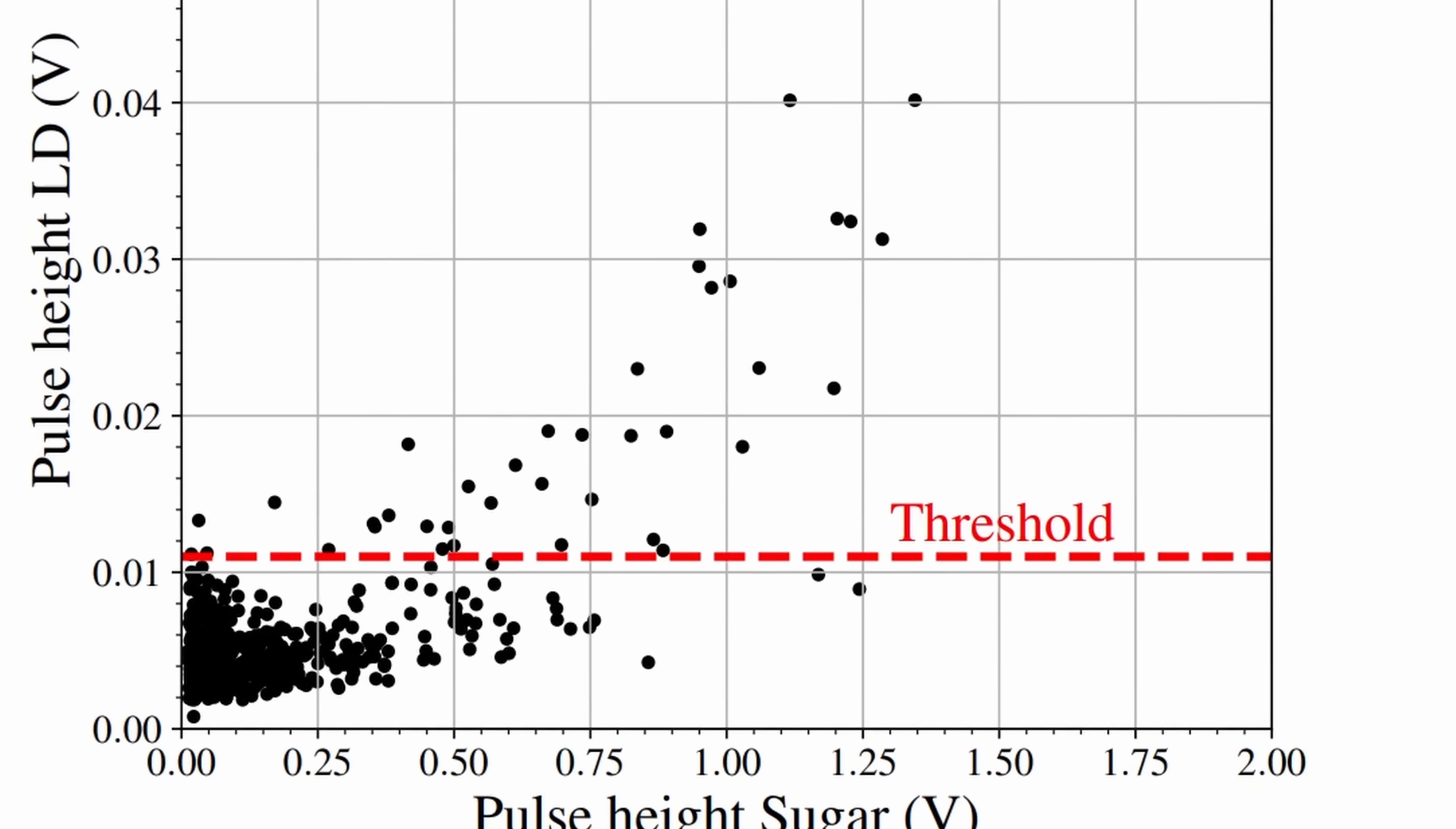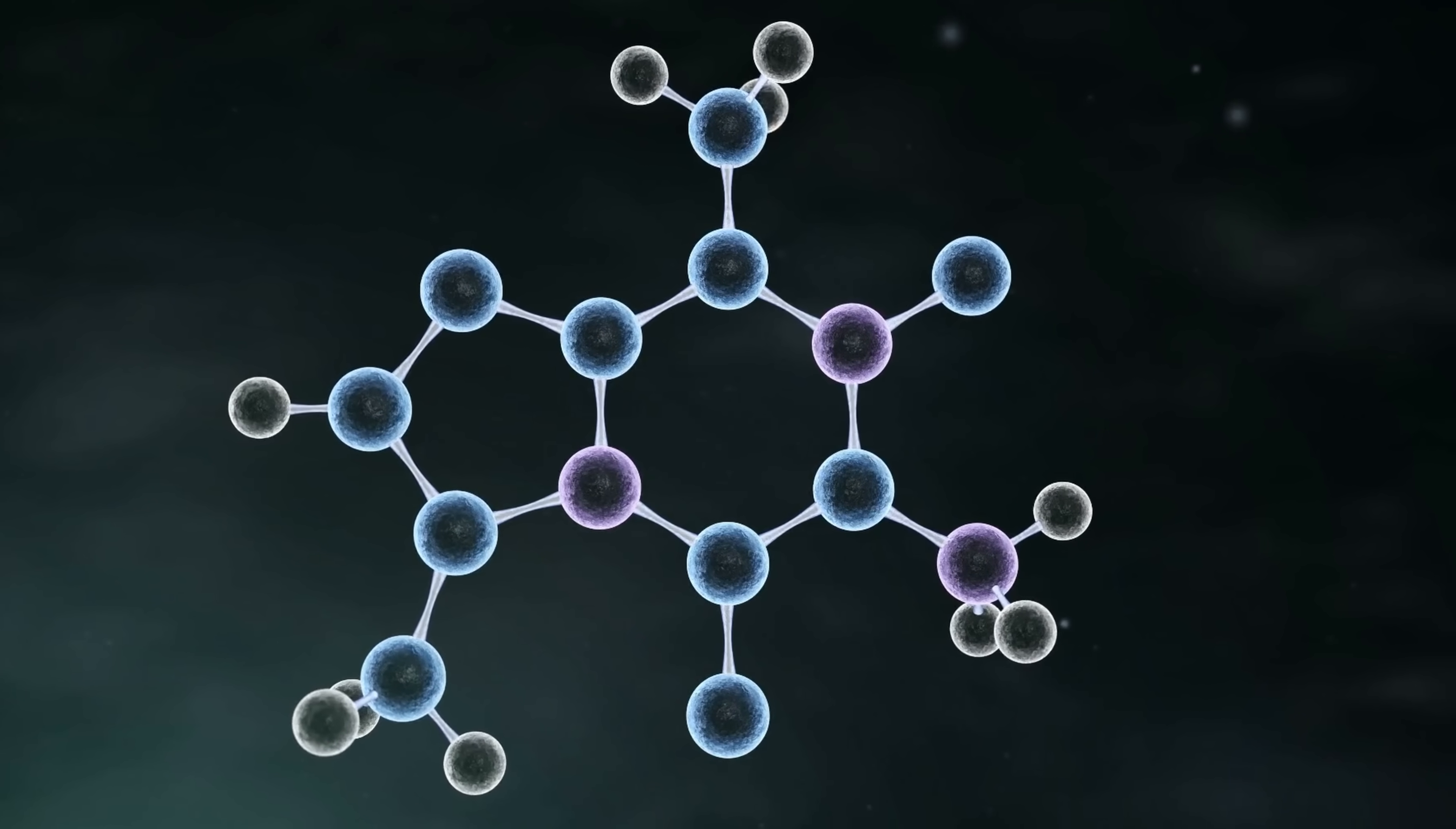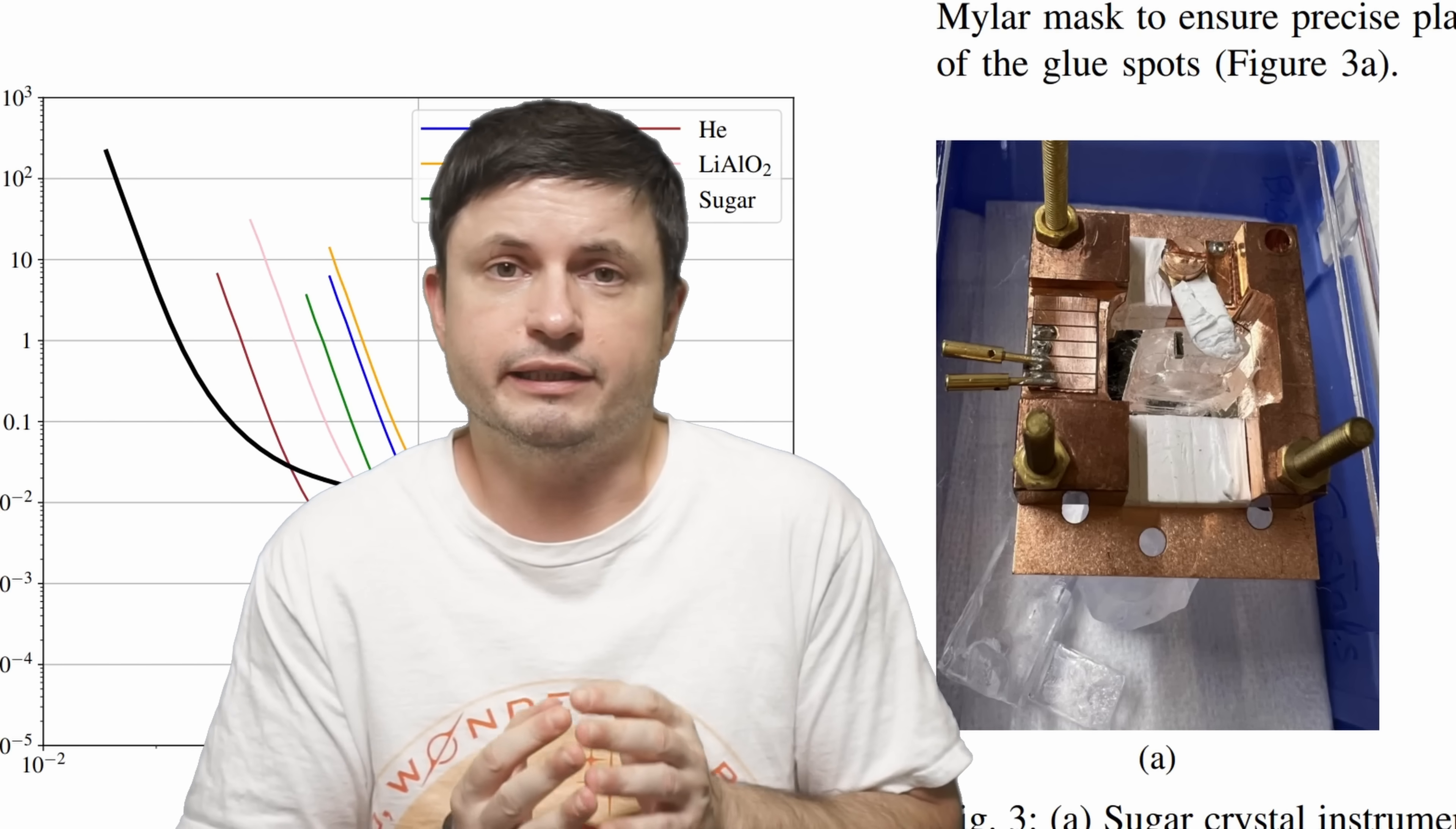And so the conclusion from this theoretical analysis is that this approach is very promising. Sucrose seems to be sensitive enough to detect a lot of stuff and may even be more sensitive compared to a lot of other more expensive things such as diamonds, sapphires or helium. And so all in all maybe some of the future experiments may indeed use sugar to try to find dark matter and a lot of other stuff.